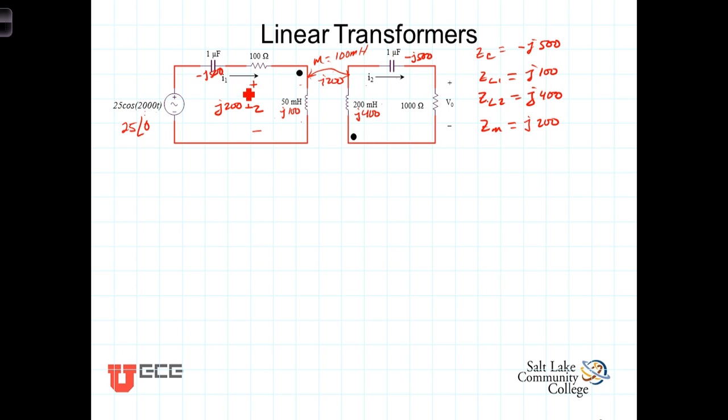And there will also be a voltage due to I1 that shows up across the secondary coil here. And because I1 is referenced into the dot, the voltage that I1 induces over here will be referenced positive at the dot also. So referenced like that and that voltage is going to equal the mutual inductance j200, in this case it will be times I1. So with that preparation let's go ahead and write two voltage loop equations, one around this loop and one around this loop.